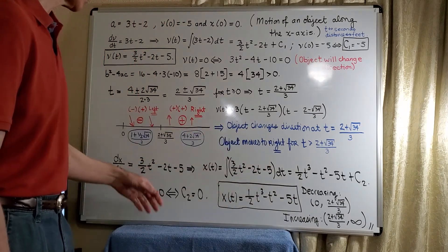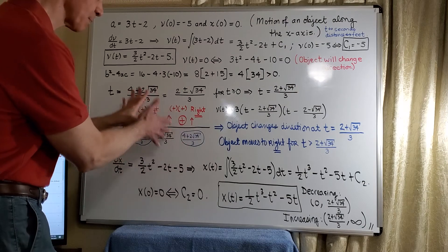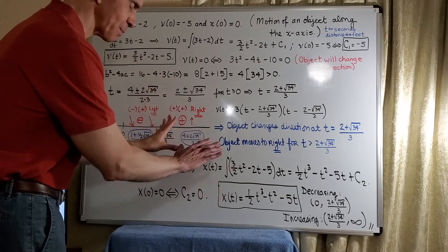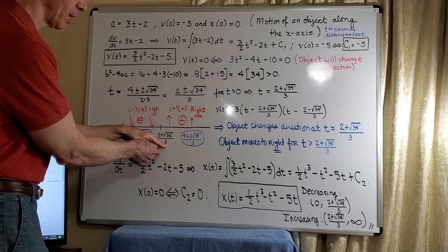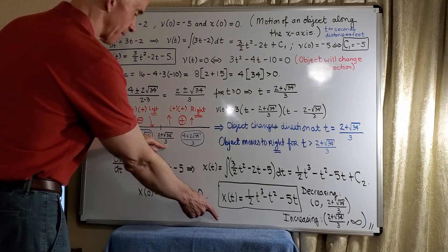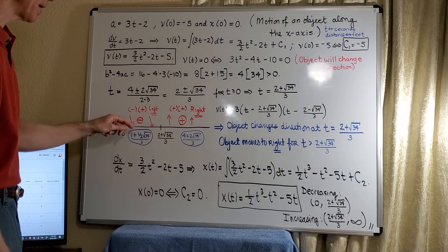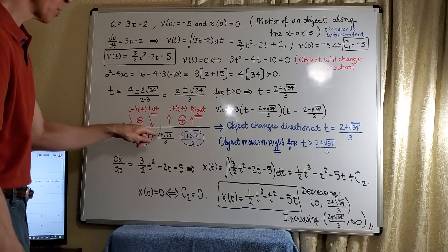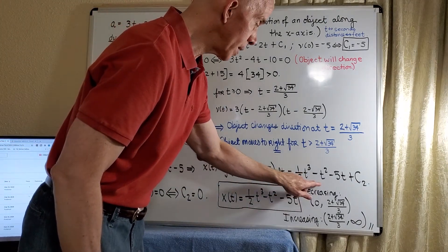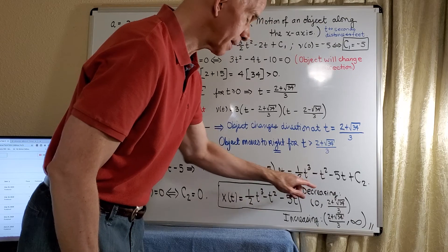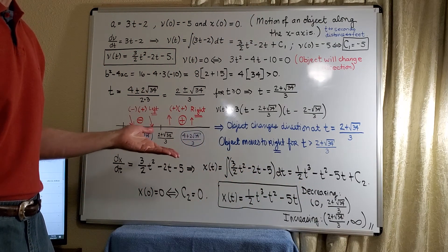And I just summarize this here because now we actually did this before we got here because we're doing this problem in the opposite direction. Here, we have a critical number of the position function. And so what we can see using increasing-decreasing theorem that now between 0 and (2 plus root 34)/3, this interval, the function is decreasing. That is, the position function is decreasing.